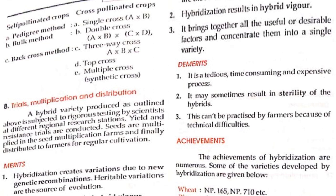Self-pollinated crops are produced by pedigree method, bulk method, or backcross method, whereas cross-pollinated crops are produced by single cross, double cross, three-way cross, top cross, and multiple cross. Next is trial, multiplication, and distribution: a hybrid variety produced as outlined above is subjected to rigorous testing by scientists at different regional research stations, where yield and resistance trials are conducted.